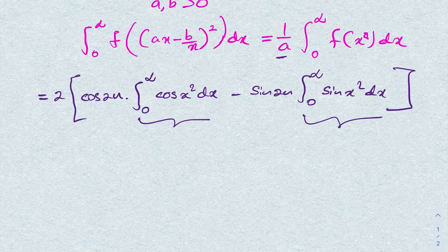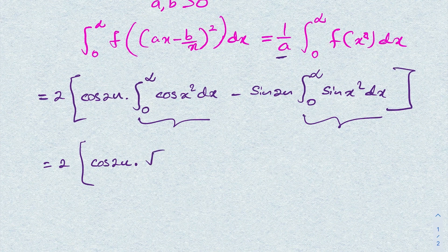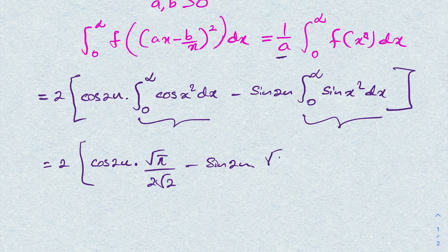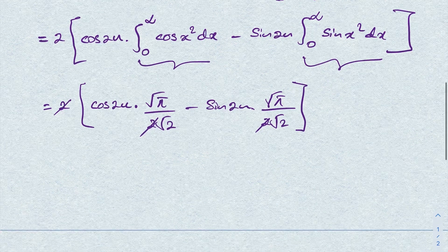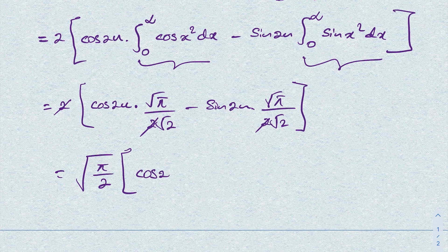The Fresnel integrals give us: the integral of cosine(x²) dx from 0 to ∞ equals √(π/2) / (2) = √π / (2√2), and likewise for the sine. Substituting and noting that the factor of 2 and the Fresnel values simplify, the final answer is √(π/2) · [cosine(2n) − sine(2n)]. If you like this type of video, please subscribe to the channel. Thank you for watching.